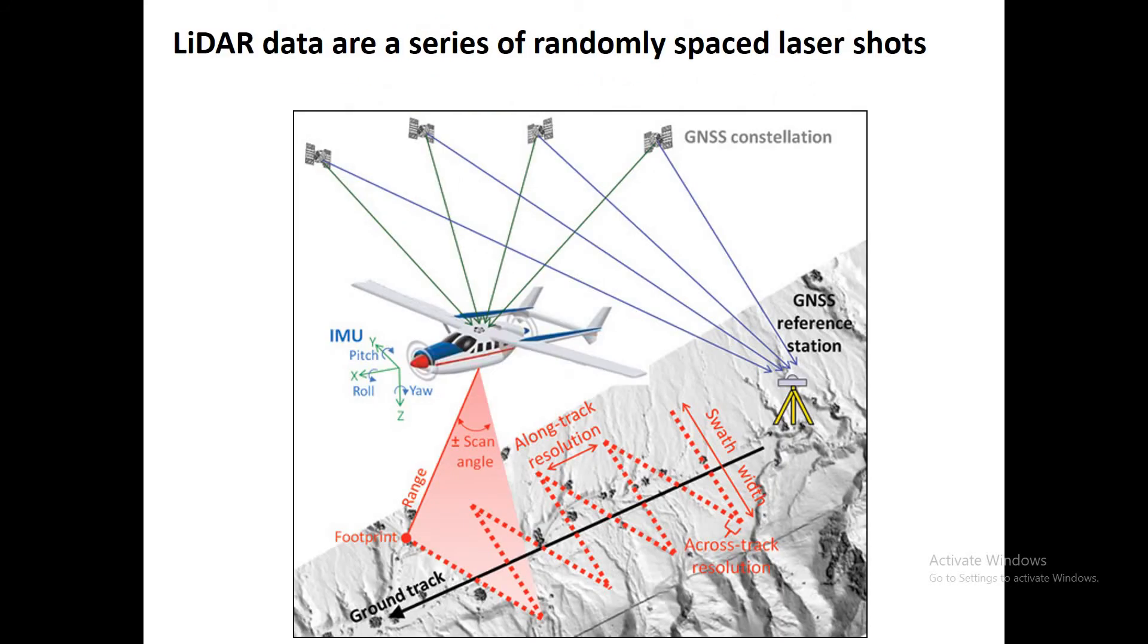LiDAR is an interesting data set because it's collected by firing a laser from an airplane using a scanner that goes back and forth across the track. This leads to a very irregular, not random, but irregular spacing of laser shots. There may be some areas where you have a lot of shots, like over here, and some areas where you have relatively few shots. This creates a problem for analyses, like hydrologic analyses, where we really need to have an elevation value for every point on the landscape.